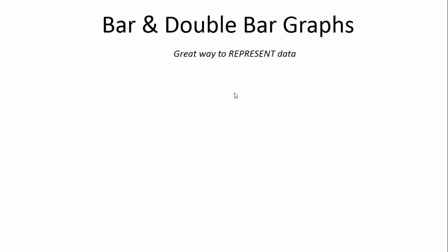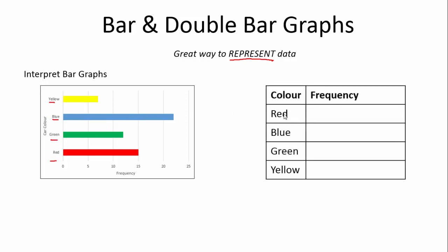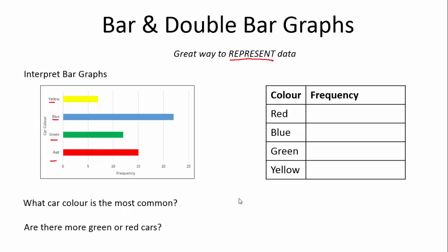So, a bar and double bar graph - just a reminder, this is a great way to represent data. How do we interpret bar graphs? We have car colors and their frequency. We sat at home and watched different cars come past us. For example, this is our frequency of yellow cars, and we saw a couple of blue, green, and red. We're going to fill this in. We might be asked questions like: what car color is the most common, and are there more green or red cars?